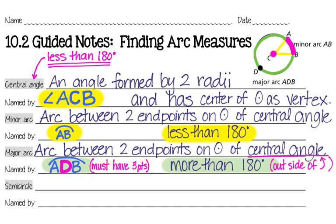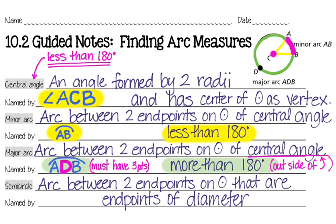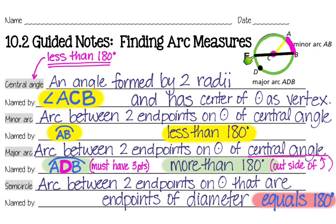What about when it's exactly 180 degrees? That would be a semicircle. A semicircle is an arc between endpoints that are endpoints of a diameter. Here we add a diameter with endpoints F and B, and we end up with two semicircles — one going from B through point A to F, and another going from B through point D to F. They are two different semicircles, but both have the same measure: 180 degrees.